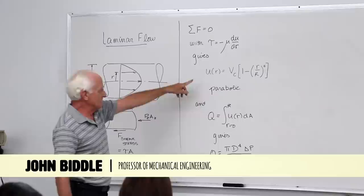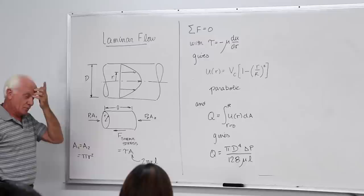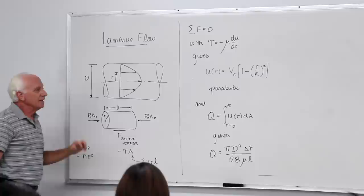1 minus little r over big R quantity squared. That's parabolic. So now we know if it's laminar flow in a tube, the flow profile, the velocity profile, will be parabolic.